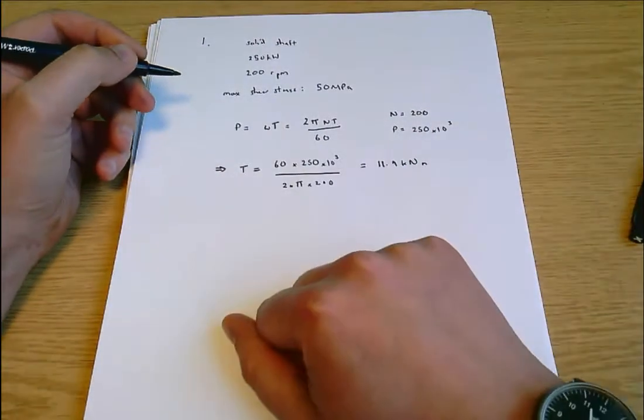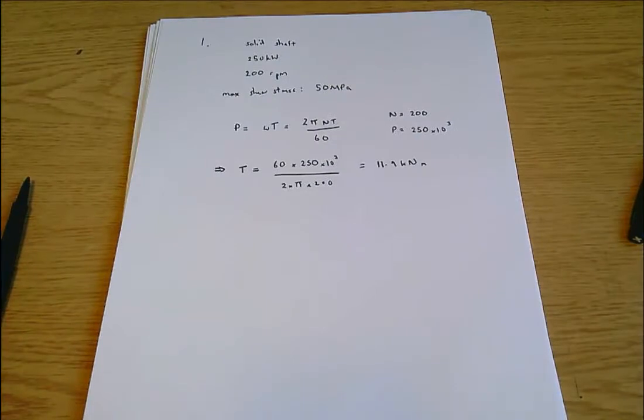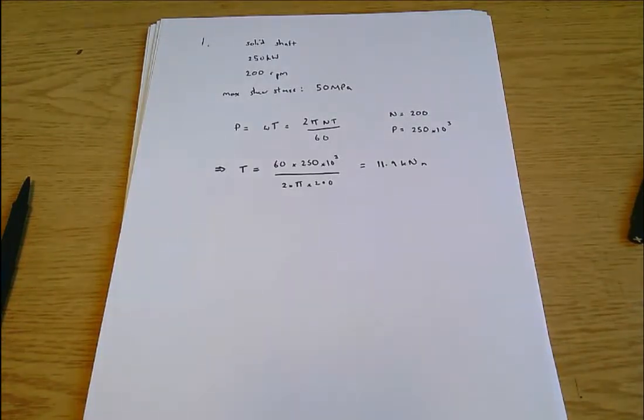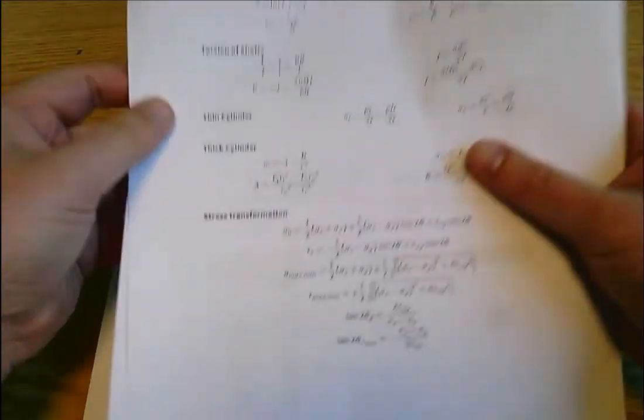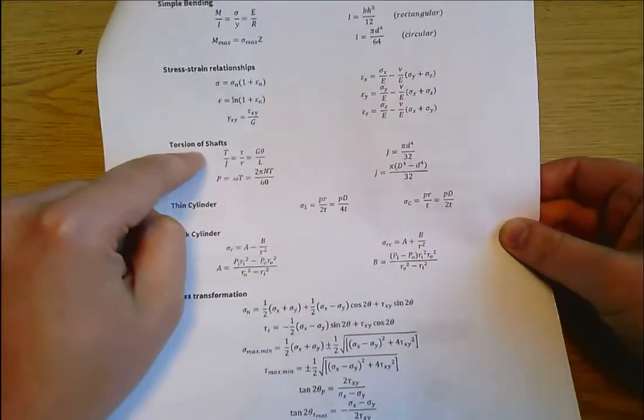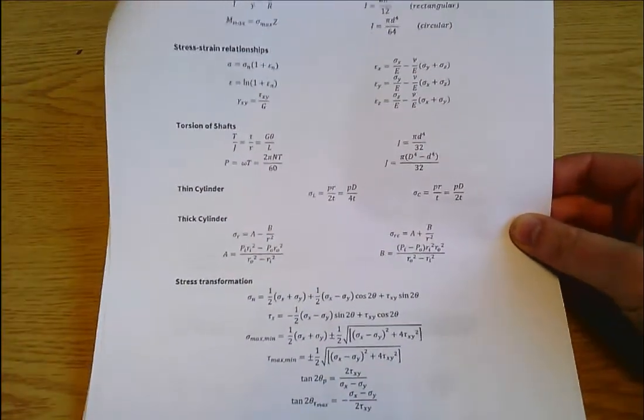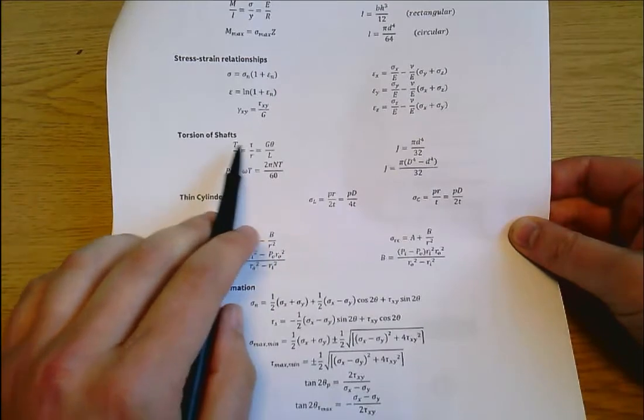So we've got the torque now and we know a maximum shear stress and we want to find the diameter of the shaft. Well now we go back to the data sheet and again we're still looking at torsion of shafts and we want the standard torsion formula really. Typically we're going to use the first equality.